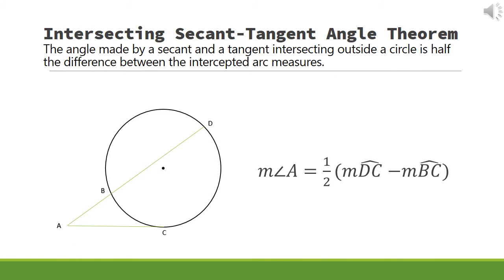Lastly, notice a secant and tangent intersecting at point A. By the intersecting secant tangent angle theorem, the angle made by a secant and a tangent intersecting outside a circle is half the difference between the intercepted arc measures.